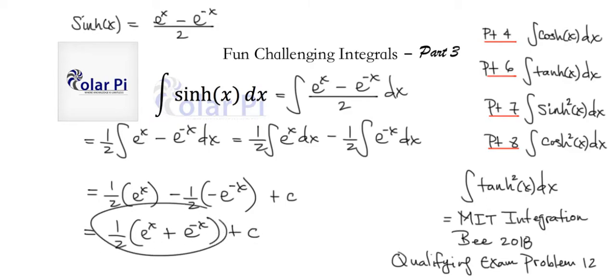Do you reckon what our answer here is? Well yeah, since sinh is defined this way, cosh is defined as e to the x plus e to the negative x divided by 2. So our final answer is just cosh x plus c.